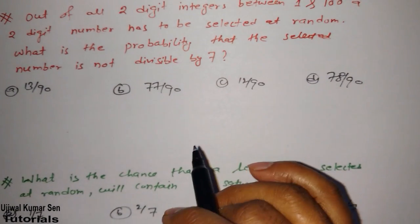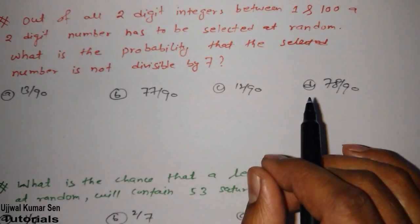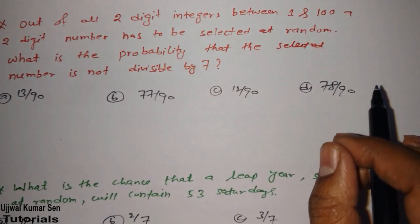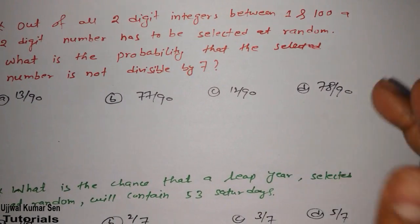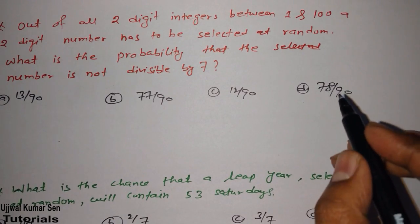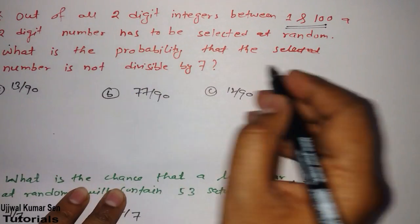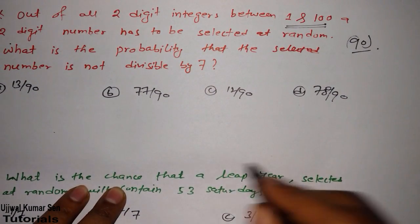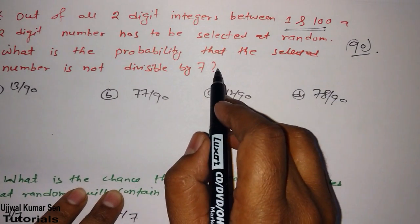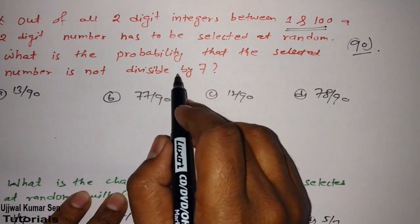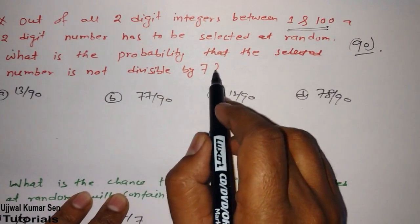In this question what we have given, out of all two digit integers between 1 and 100, a two digit number has to be selected at random. So in between 1 and 100, how many two digit numbers are there? 90.